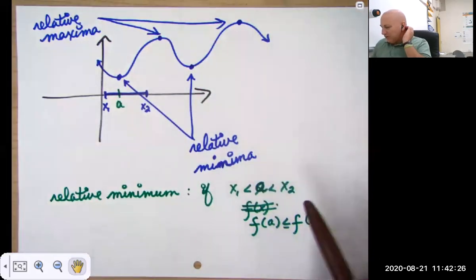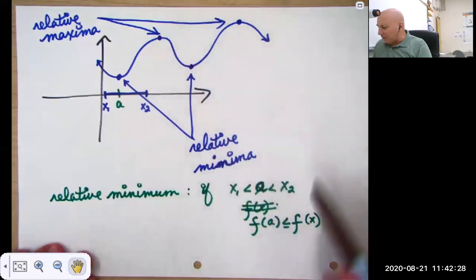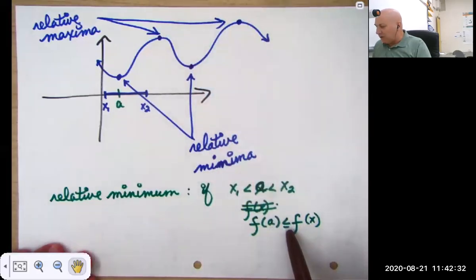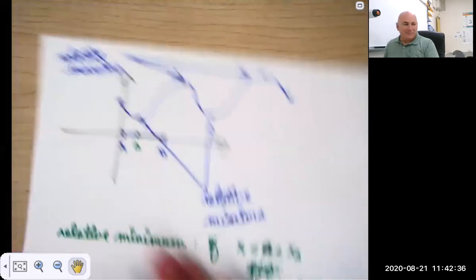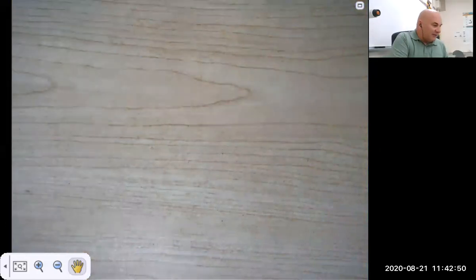And if we wanted to talk about a relative maximum, obviously f of a would have to be greater than or equal to all the f of x's in the interval. So that part, that's just getting us started. All right, let's continue then.